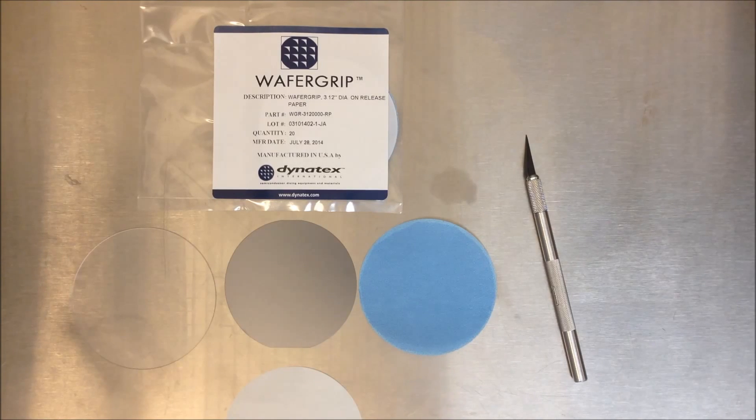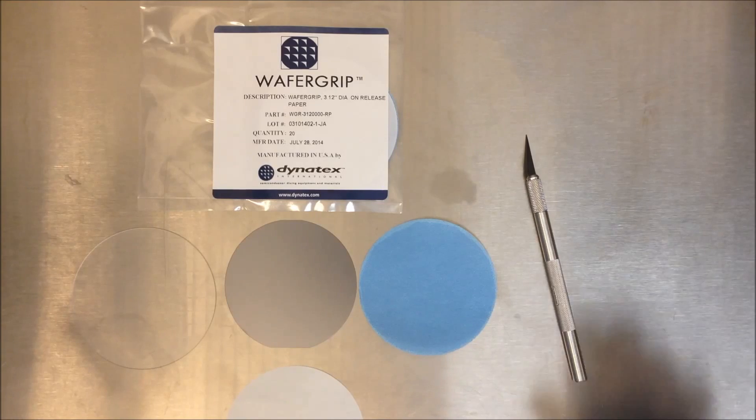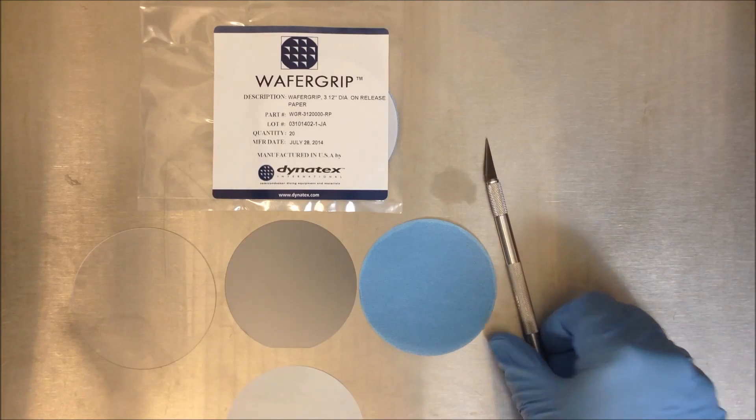To start with I have the materials. These are the wafer, the substrate, wafer grip, wafer cradle and the secret weapon the scalpel.